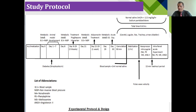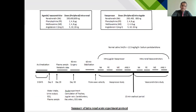Vasopressor and vasodepressor acute study experiments were conducted, including the adrenergic agonists: noradrenaline, phenylephrine, methoxamine, and angiotensin II. The doses used were 200, 400, and 800 nanogram for noradrenaline; 2, 4, and 8 microgram for phenylephrine; 2, 4, and 8 for methoxamine; and 5, 10, and 20 nanogram for angiotensin II. This is the protocol for the acute renal experimental summary.